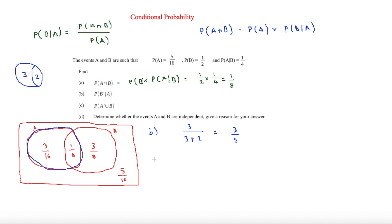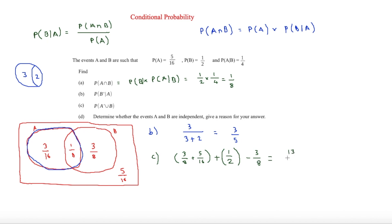For Part C, we're looking at P(not A or B). Not A is everything outside A, which is 3/8 plus 5/16. Then or B adds in B, which is 1/2. But we have overlap of 3/8 counted twice, so we minus 3/8, giving us 13/16.